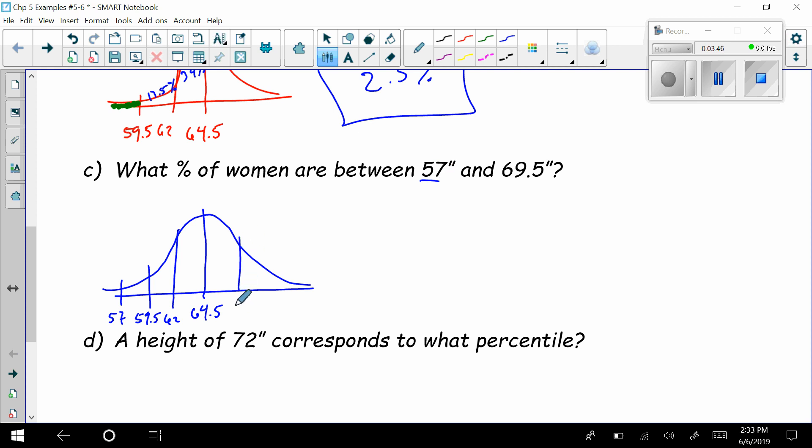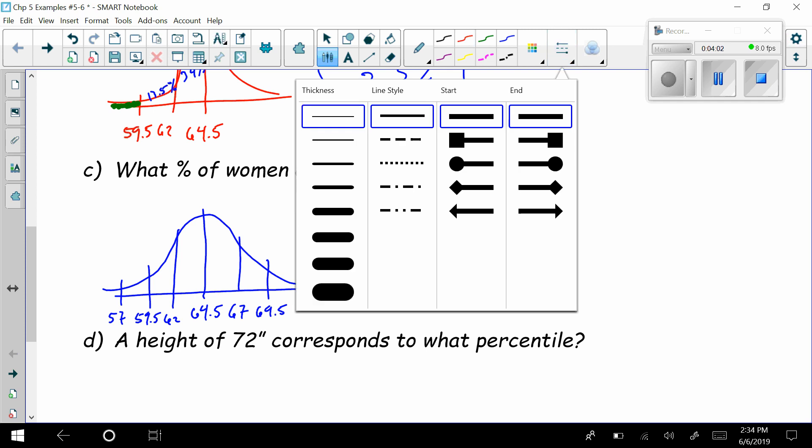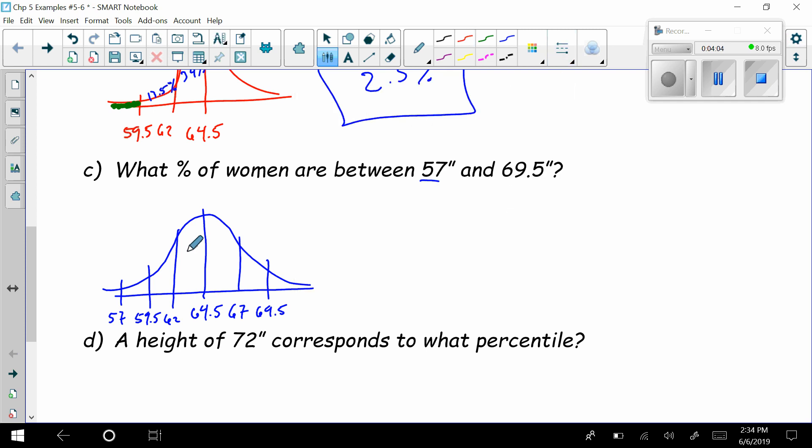Up here, we do the same thing. This would be 67 here. Not big enough. 69.5 is big enough. A bunch of different ways to go about this. I think most people in statistics are going to say that this is 34%. This is 34%. This is 13.5. This is 13.5. This last little section here is 2.35. I get all of these because I want from 57 up to 69.5. If I were to add all of those up,